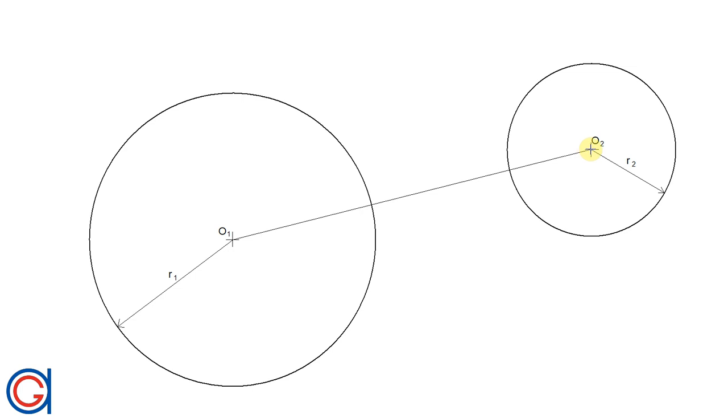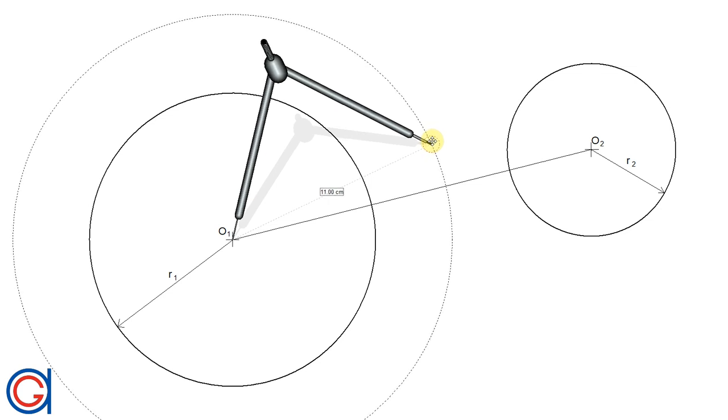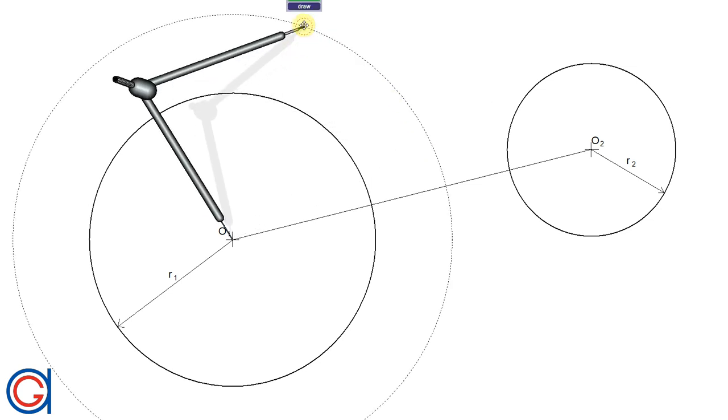The first step is to join the center points O1 to O2, and the next thing we're going to work out is the perpendicular bisector of this line O1, O2.